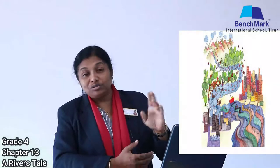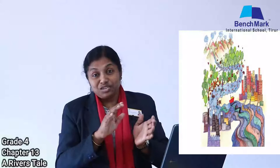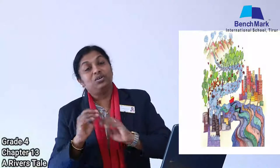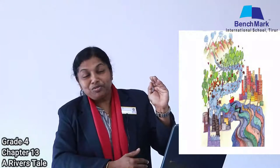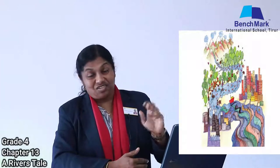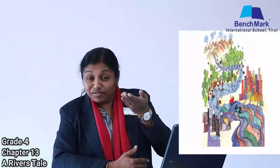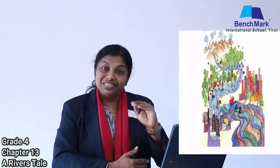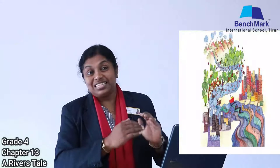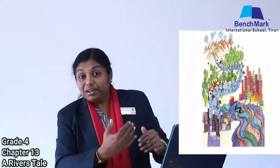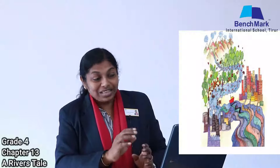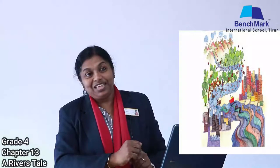A river can be divided into three stages: the young stage, the middle-aged stage, and the old-aged stage. In the young stage, you can see lots of fish and the water is clear. Coming down a little more, you can see the banks of the river have some villages and houses, and people are using the water for different purposes. Animals are also present and they use the water in many ways.